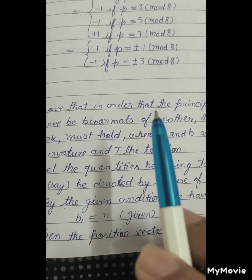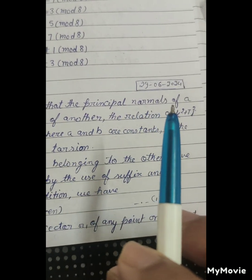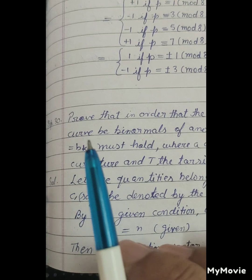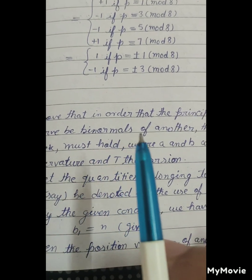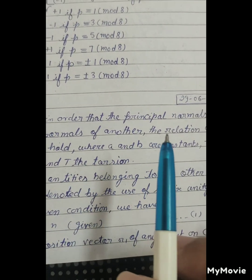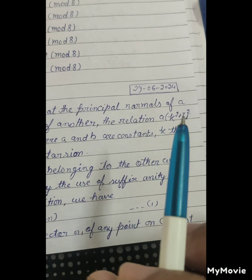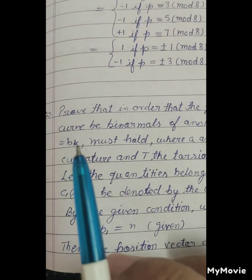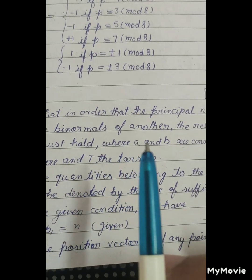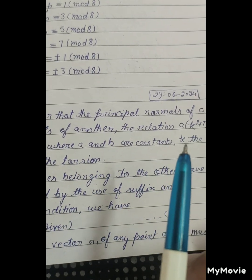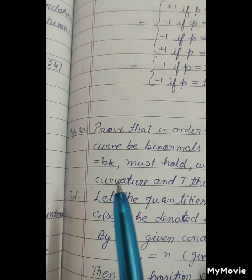Prove that in order that the principal normal of a curve be binormal of another, the relation a(k² + τ²) = bk must hold, where a and b are constants, k the curvature, and τ the torsion.